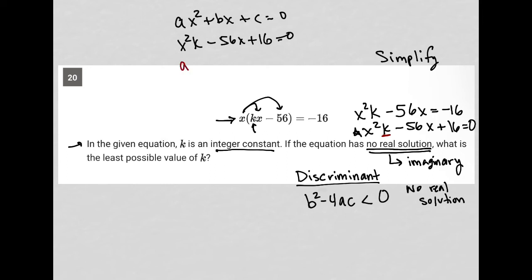Our a value is k—the coefficient in front of x². Our b is -56, and our c is positive 16.